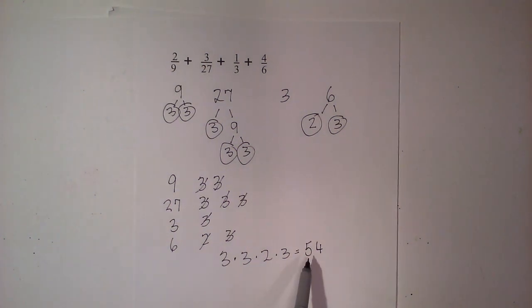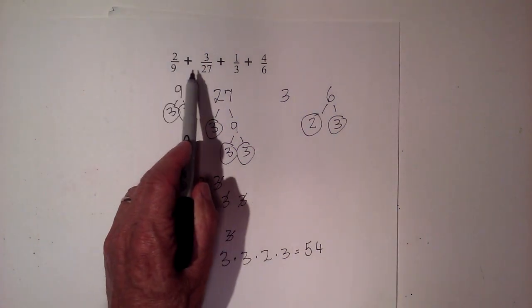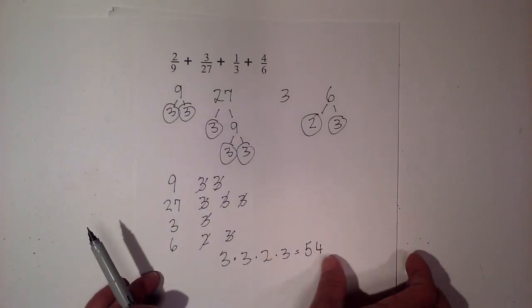So when you multiply these together 3 times 3 times 2 times 3 that is 54. So the lowest common denominator for 9, 27, 3, and 6 is 54.